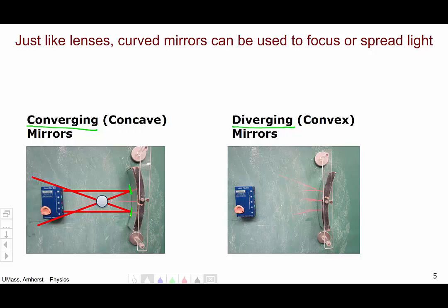In this sense, the concave converging mirror is functioning similar to a converging lens. It's taking incoming parallel light rays and converging them to a point.